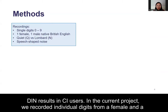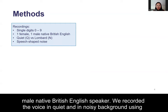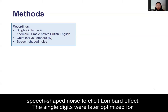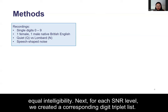In the current project, we recorded individual digits from a female and a male native British English speaker. We recorded their voice in quiet and in noisy background using speech-shaped noise to elicit Lombard effect. The single digits were later optimized for equal intelligibility.